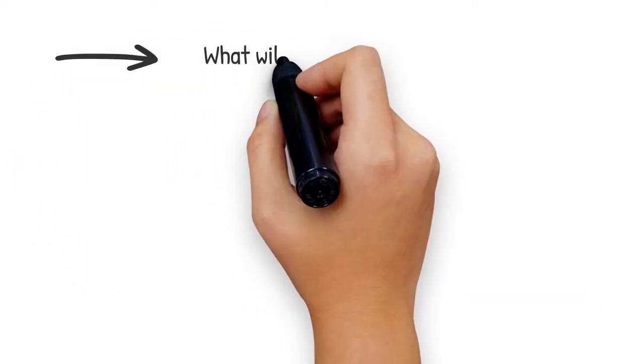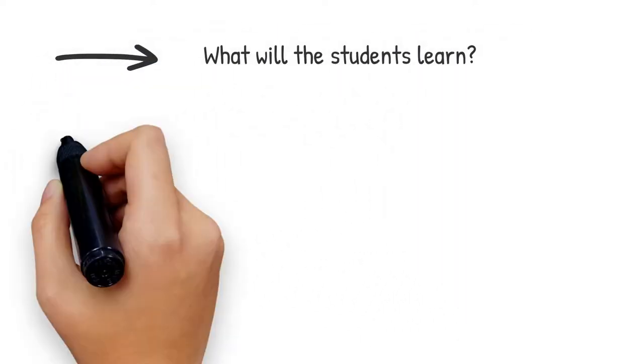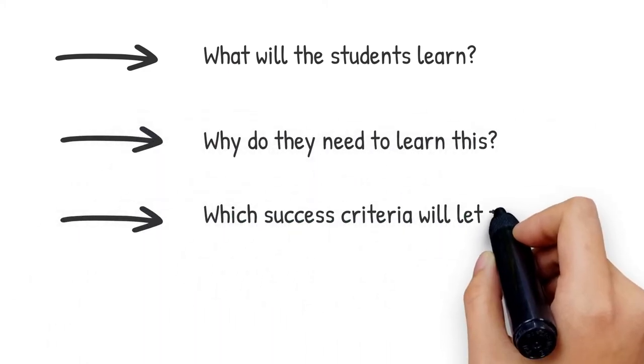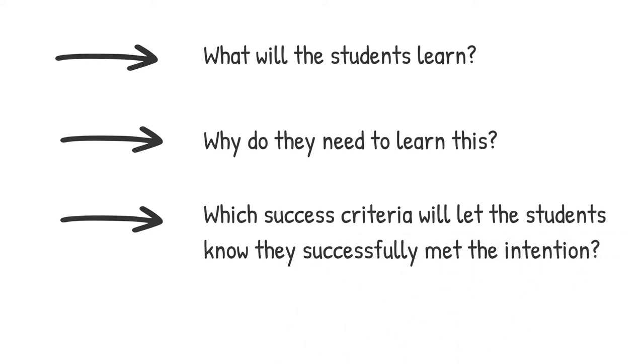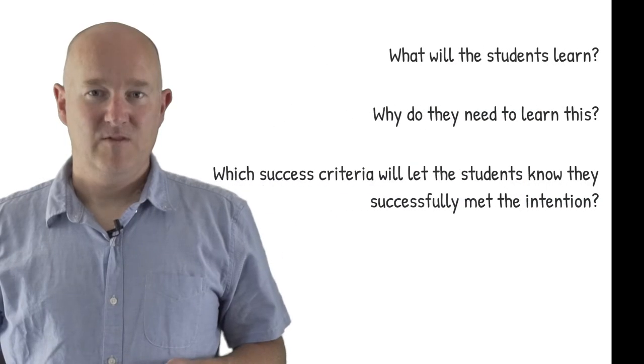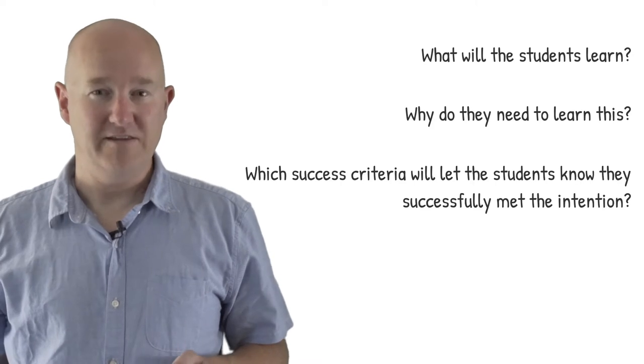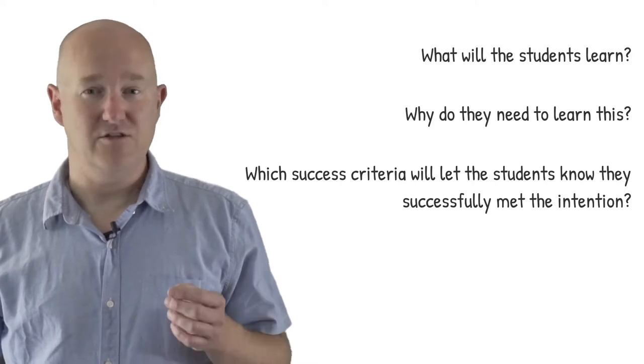To put it simply, you can look at your lessons or entire LESs through these three questions: What will the students learn? Why do they need to learn this? Which success criteria will let the students know they successfully met the intention? Once you have your answers, formulate your learning intentions using language that students will understand.